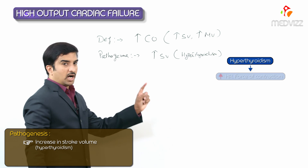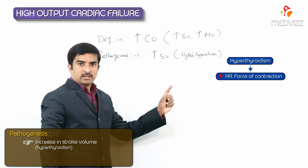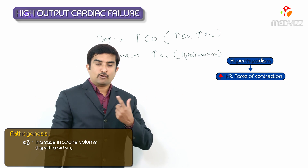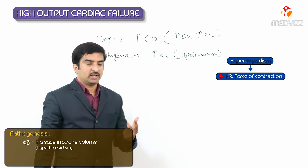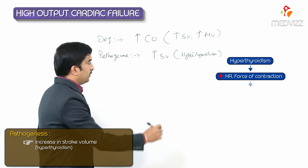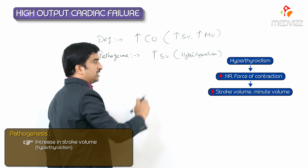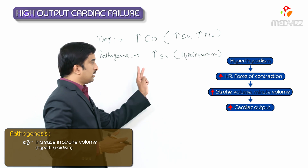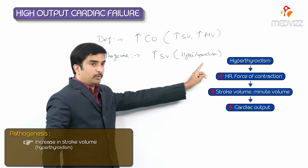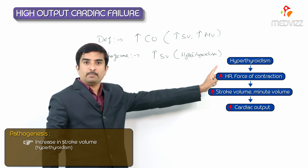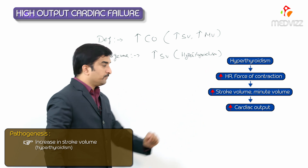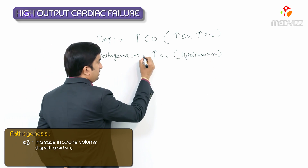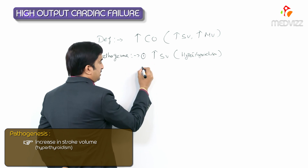An example is hyperthyroidism. In hyperthyroidism, there will be an increase in the heart rate as well as an increase in the force of contraction of the heart. So there will be an increase in the stroke volume as well as minute volume, leading to an overall increase in the cardiac output.